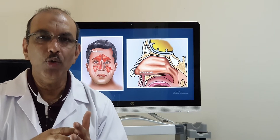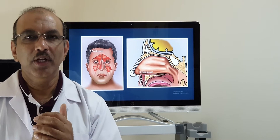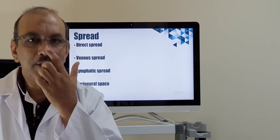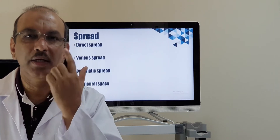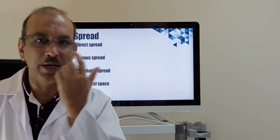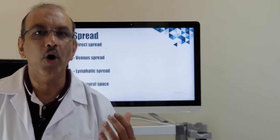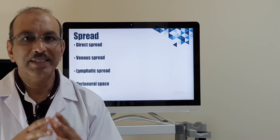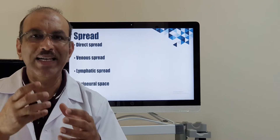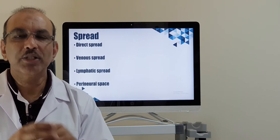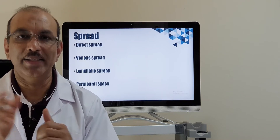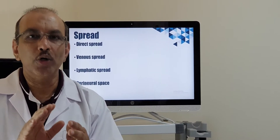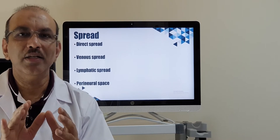Now I am going to tell you the complications related to sinusitis. How does this sinus infection spread to nearby structures? It can be a direct spread because the other structures are very near — for example, the sinuses and the eye are very near, especially the ethmoid sinus, and this is more common in children. Second, it can spread through the veins, which are directly related to the sinuses, especially between the sinus and the eyes. Third is lymphatic spread, and the last is perineural spread — there is space around the nerves which can also facilitate spread.